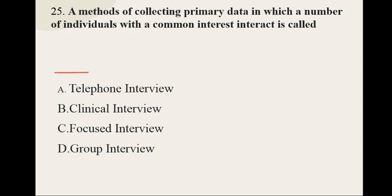Question number twenty-five: A method of collecting primary data in which a number of individuals with a common interest interact is called — options are telephone interview, clinical interview, focused interview, and group interview — and the correct option is group interview. I hope you have understood all these 25 questions along with answers and explanations.